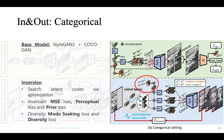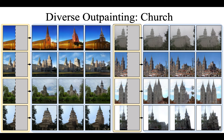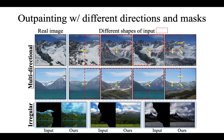Here are some visual results of the diverse outpaintings on the landscape dataset. The results are realistic and diverse, with no obvious artifacts at the boundary between the given input and the outpainting area. Here are other results from the church dataset — in addition to natural landscapes, we can also generate structural scenes. Our pipeline supports outpainting from different directions; we can generate to the left, top, or bottom from one, two, or three patches.